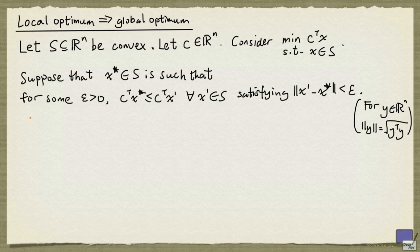In optimization terminology, x star is known as a local optimum of this optimization problem. The conclusion is that x star is in fact a global optimum of this optimization problem.